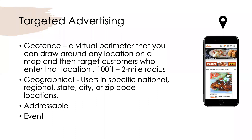One we love especially around rodeo time is event targeting. You create a target fence around any event for a set timeframe, collect device IDs of attendees, and retarget those attendees during and up to 30 days after the event. For example, if it's a Texas country music concert and you sell boots, you can target those concert attendees with ads for boots — hopefully they'll come in and buy a new pair before the next concert.